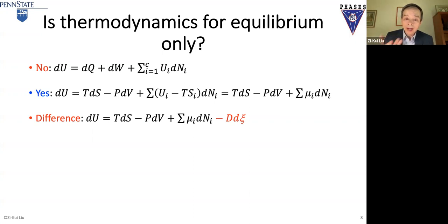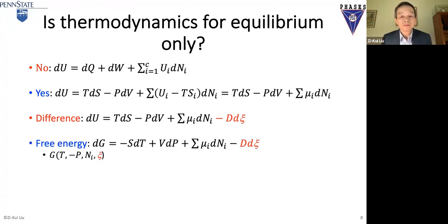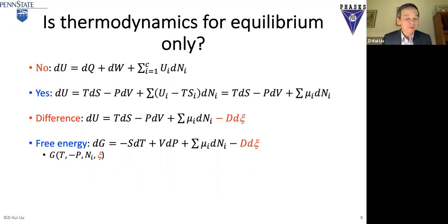If you want to apply thermodynamics to non-equilibrium systems or a system at any condition, we have to keep the last term. If we change it to Gibbs energy, the term d-xi is kept there. That means the Gibbs energy should be a function of temperature, pressure, composition, and xi (psi).